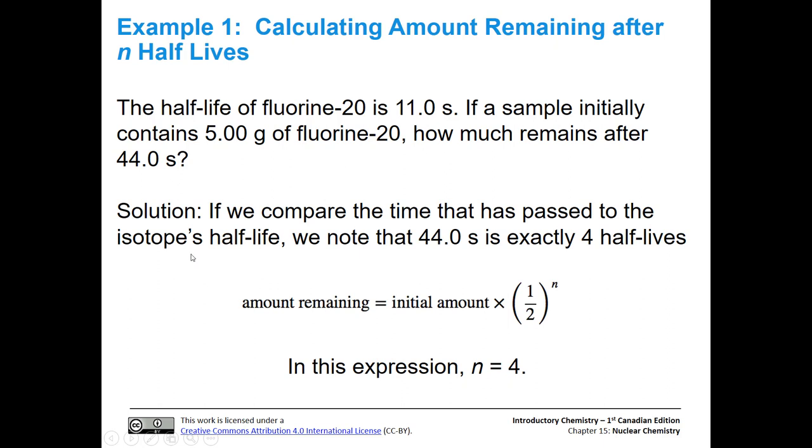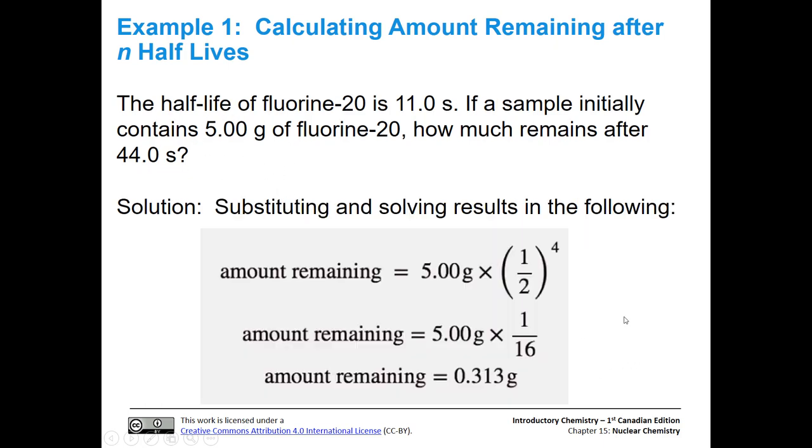Now let's go ahead and basically fill in our expression. We've already noted that 44 seconds is exactly four half-lives, so now we know what n is. That's going to be four. We know what the initial amount is, and that's going to be this five grams of fluorine-20. So we plug in everything. We put this in our calculator. One divided by two, press enter, take that to the fourth power. That's going to be one over 16. You could also just do this separately and then multiply it by five grams. When you multiply these two together, you're going to get 0.313 grams.